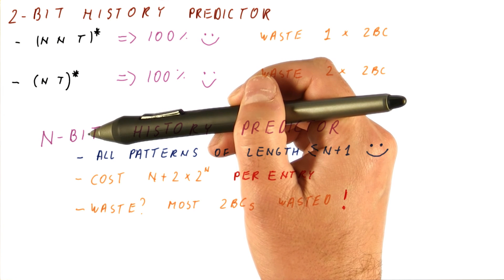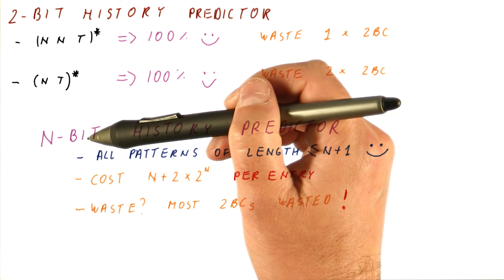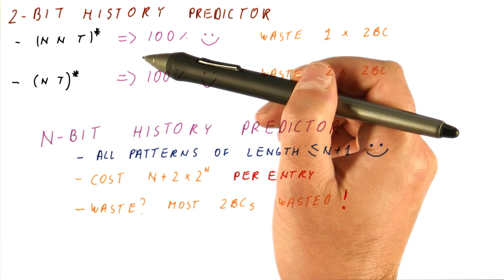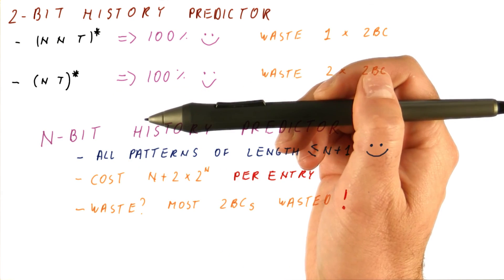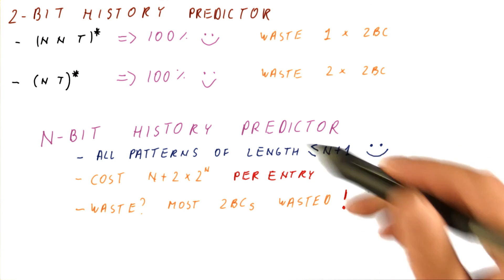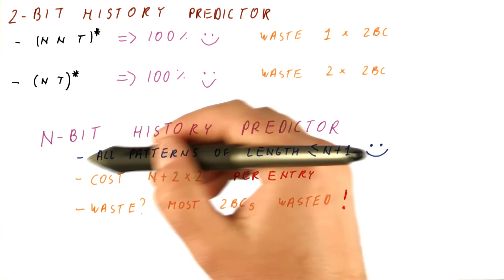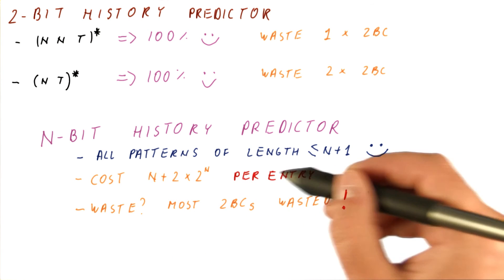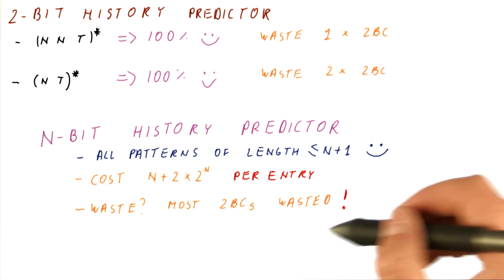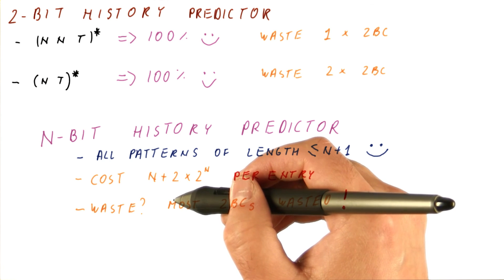So for example, in order to do something like an eight-iteration loop, we have to have a pattern of eight or nine lengths, which means that we need a seven or eight-bit history in order to predict that successfully. So we do want to have a long history, but we'd rather have it without this huge cost and without the huge waste that the cost comes with.